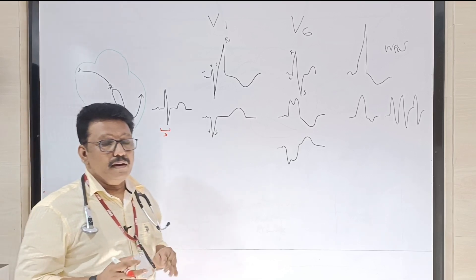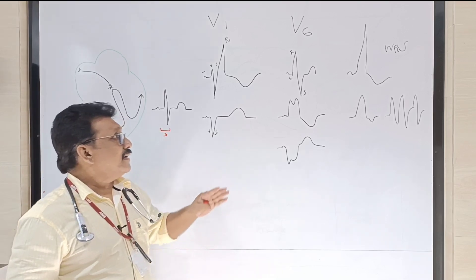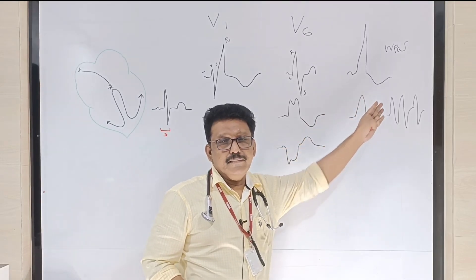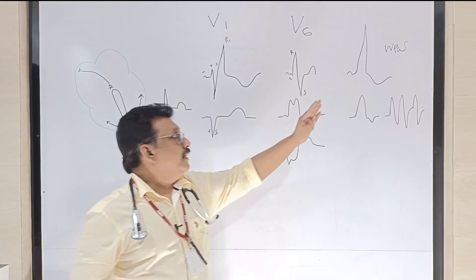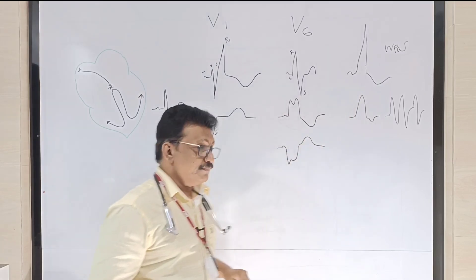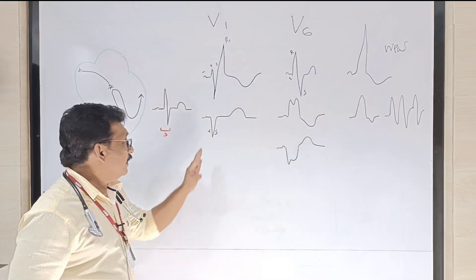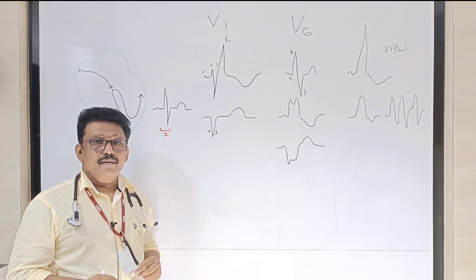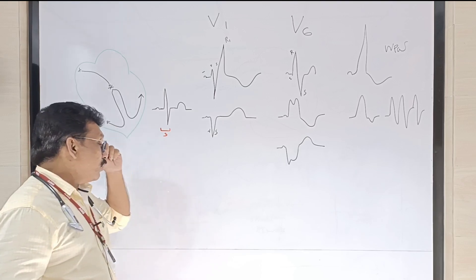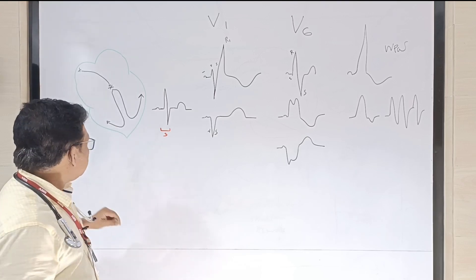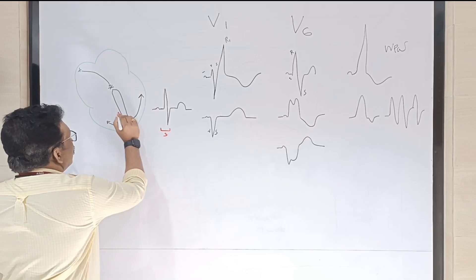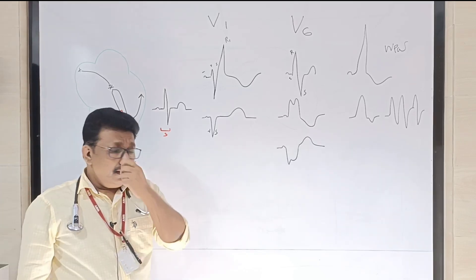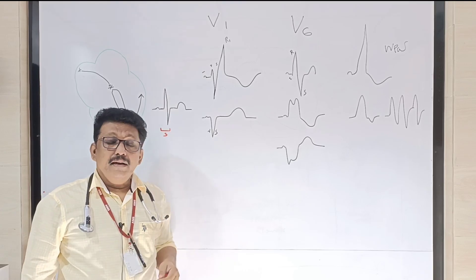Last class we discussed Wolf-Parkinson-White syndrome — that's an accessory pathway where you get a wide QRS complex. Here we are going to discuss right bundle branch block and left bundle branch block. Right bundle branch block means a block in the right part of the bundle.